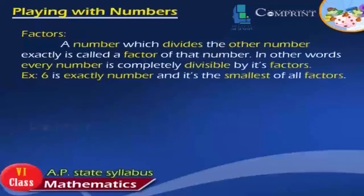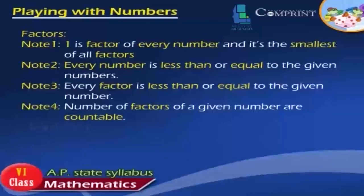Factors: A number which divides another number exactly is called a factor of that number. In other words, every number is completely divisible by its factors. Notes: (1) 1 is a factor of every number and is the smallest of all factors. (2) Every factor is less than or equal to the given number. (3) The number of factors of a given number is countable.